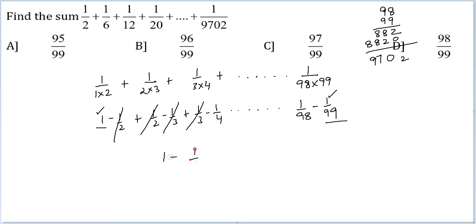So you are left with 1 minus 1 by 99, or your answer will be 98 by 99. Therefore, the correct answer is option D.